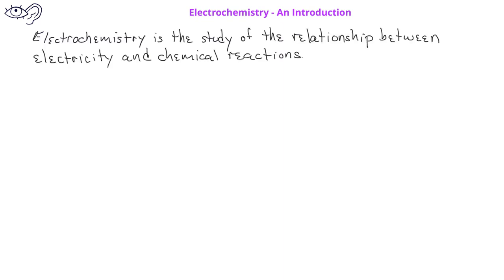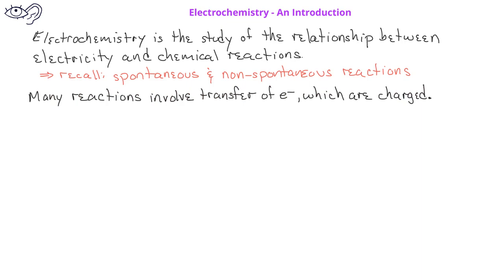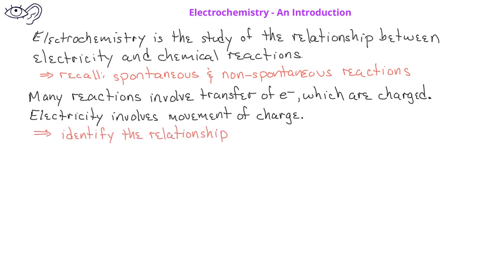Electrochemistry is the study of the relationship between electricity and chemical reactions. We will use our understanding of spontaneous and non-spontaneous reactions to help us understand this relationship. Many chemical reactions involve transfer of electrons, which are charged particles. Since electricity also involves movement of charge, we can begin to understand that there might be a relationship between these types of reactions and electricity.